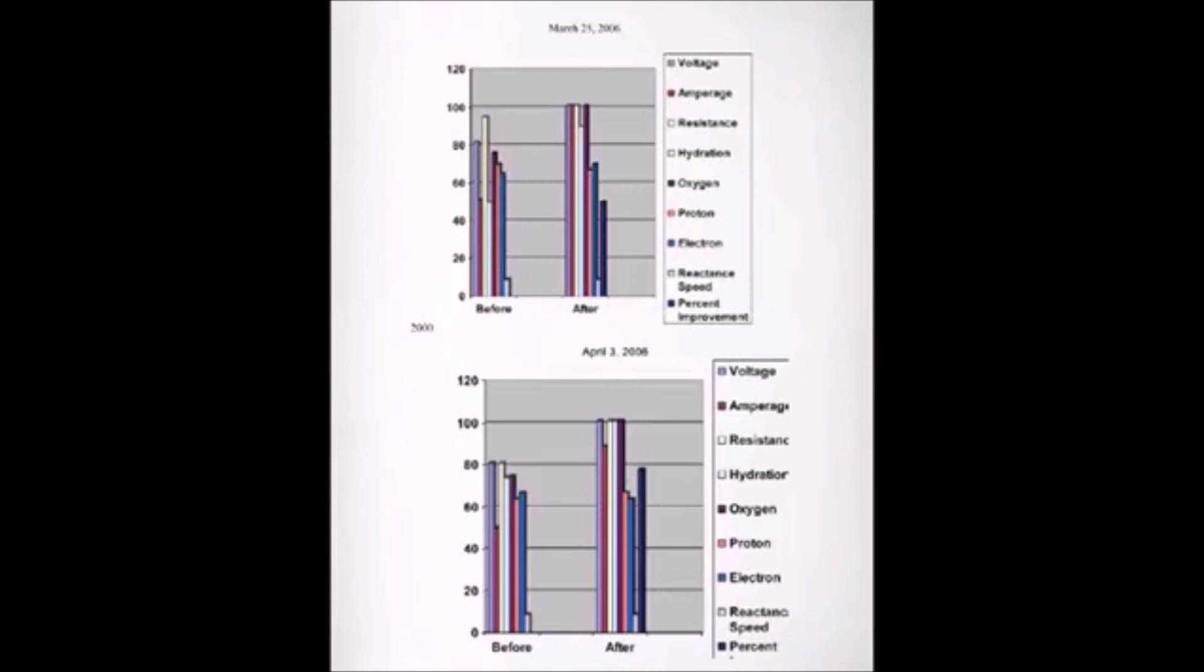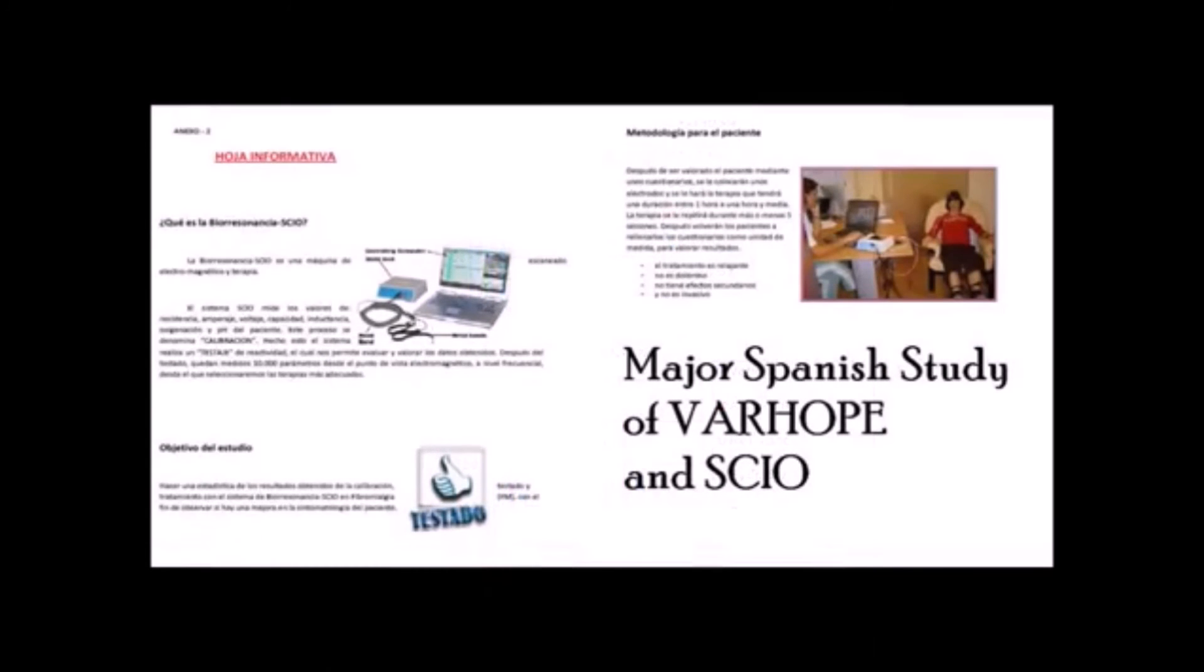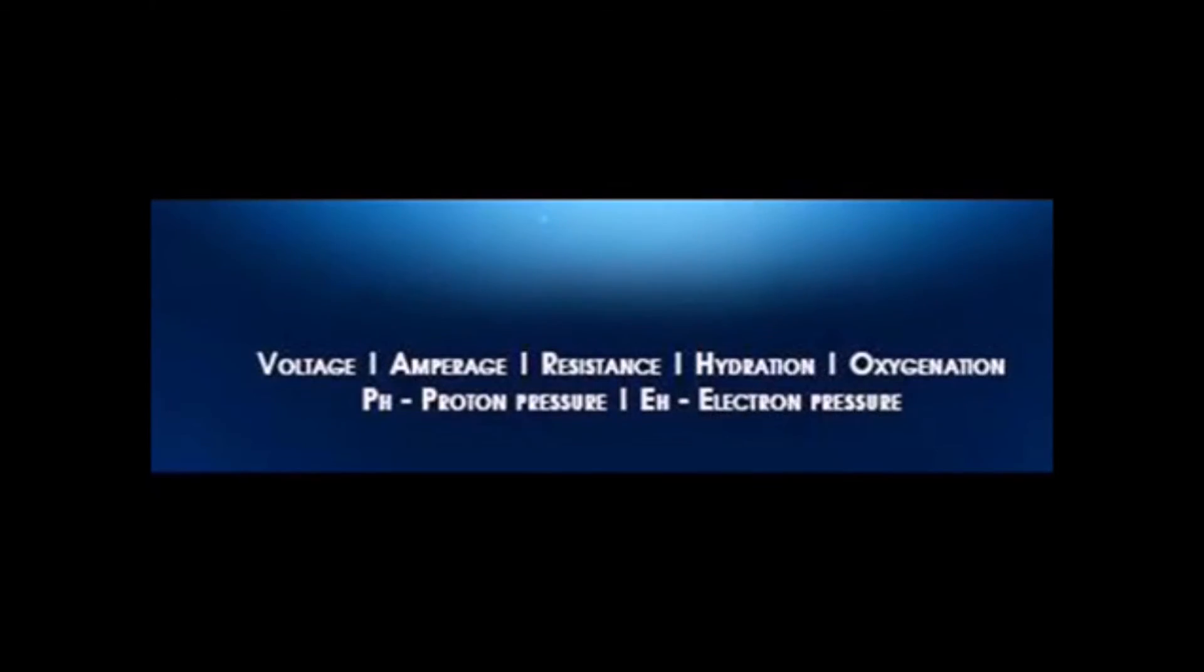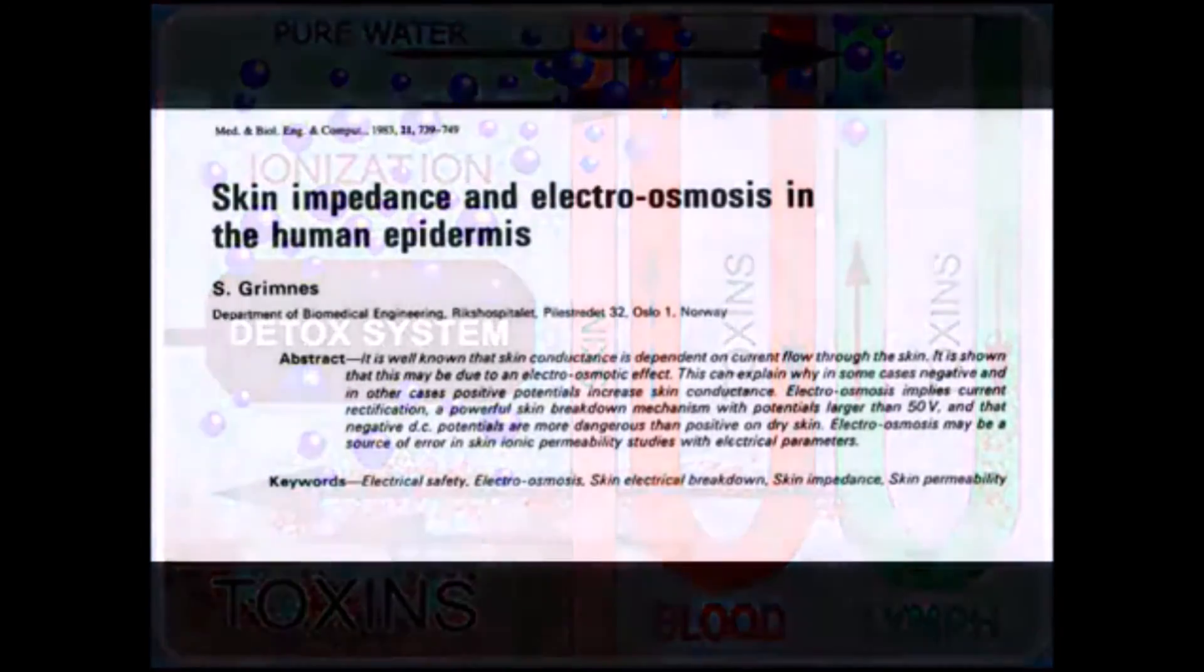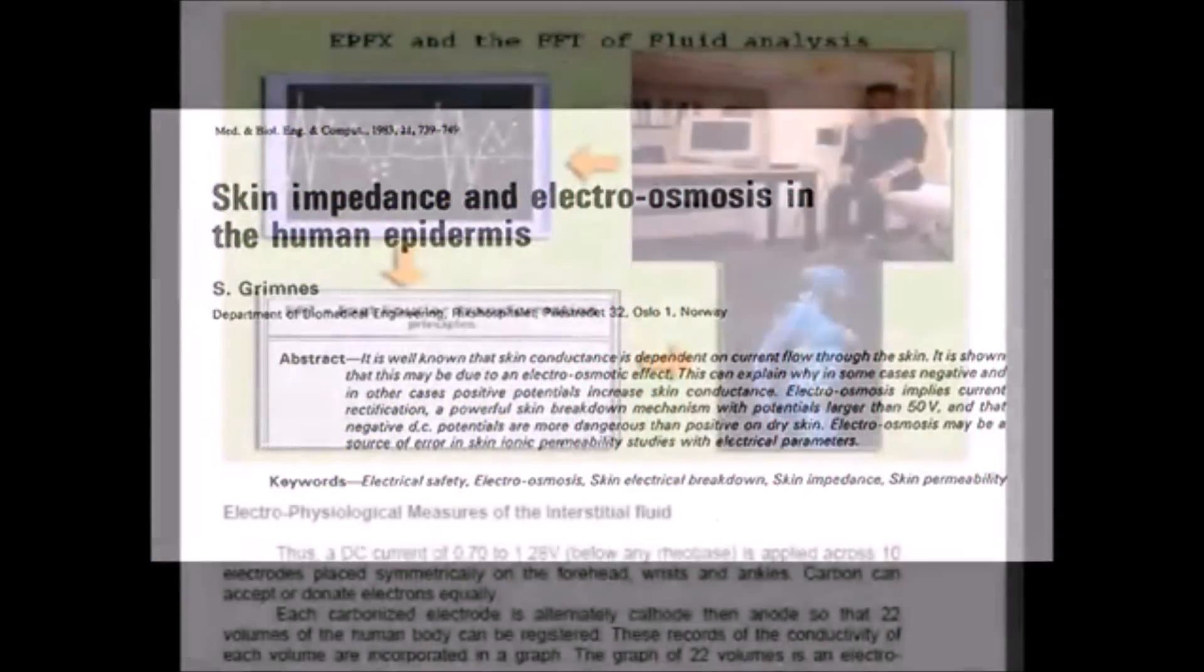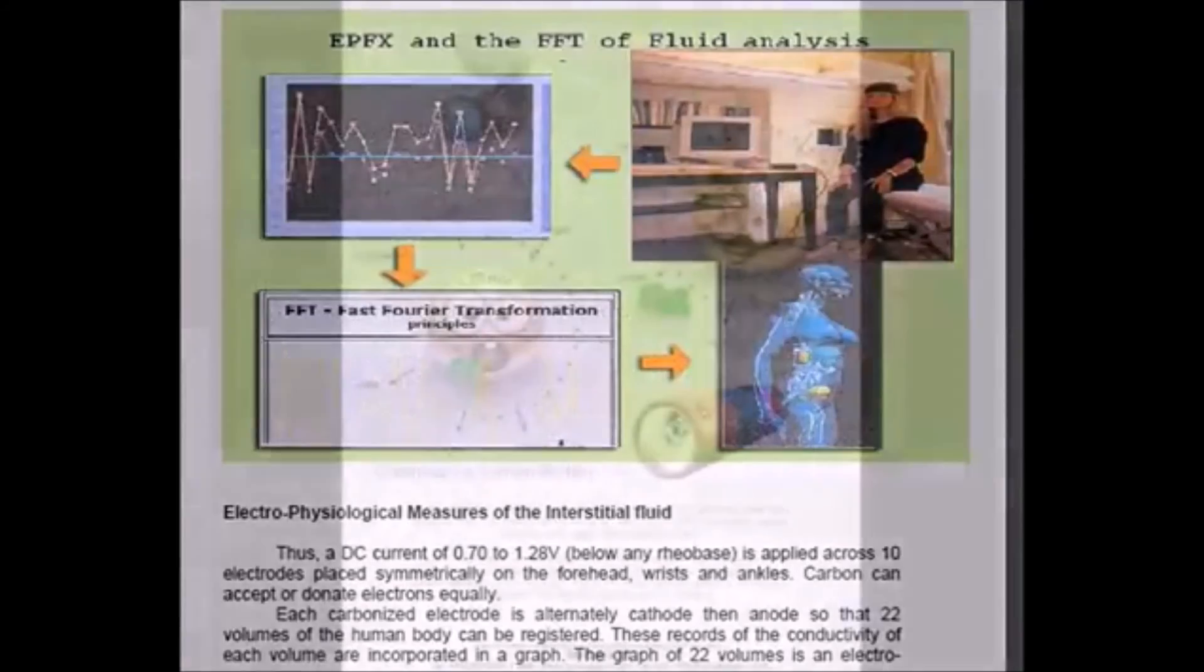Since the pH is a measure of negative charges versus positive charges, we can now get an electrical measure of the different parts of the body and get a pH score or an EH score, proton or electron.